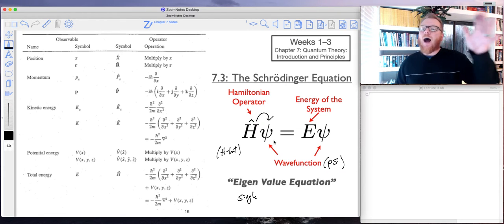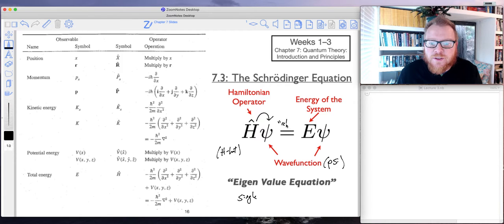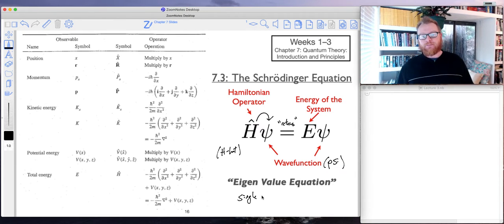So in these eigenvalue equations with Hamiltonian operators, the operator operates on the wave function—okay, so I'll represent that by drawing an arrow—the operator operates on the wave function and it returns—so that's what I'm going to put in place of this equal sign—it returns the energy of the system, which is our single-valued component, our eigenvalue.